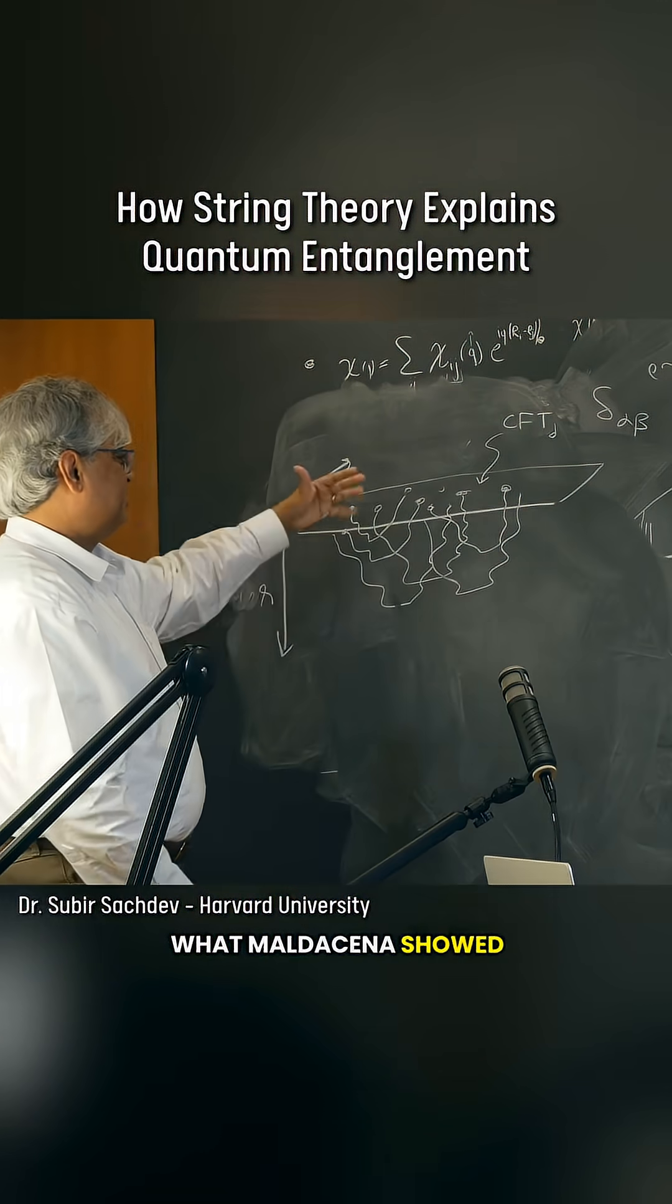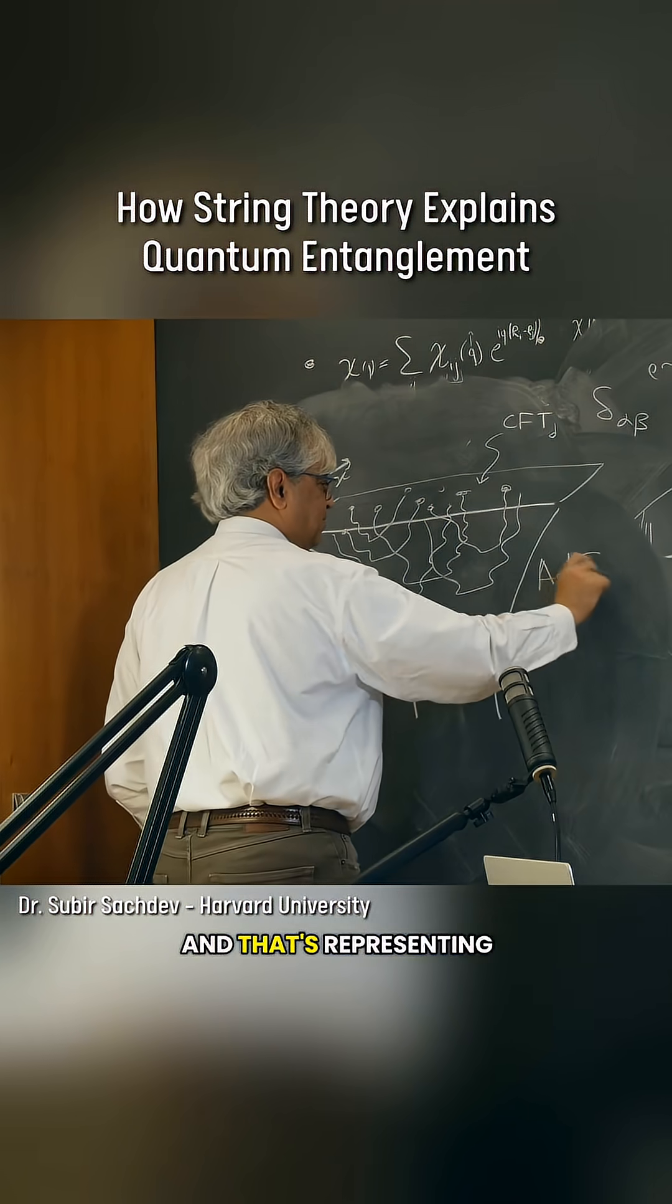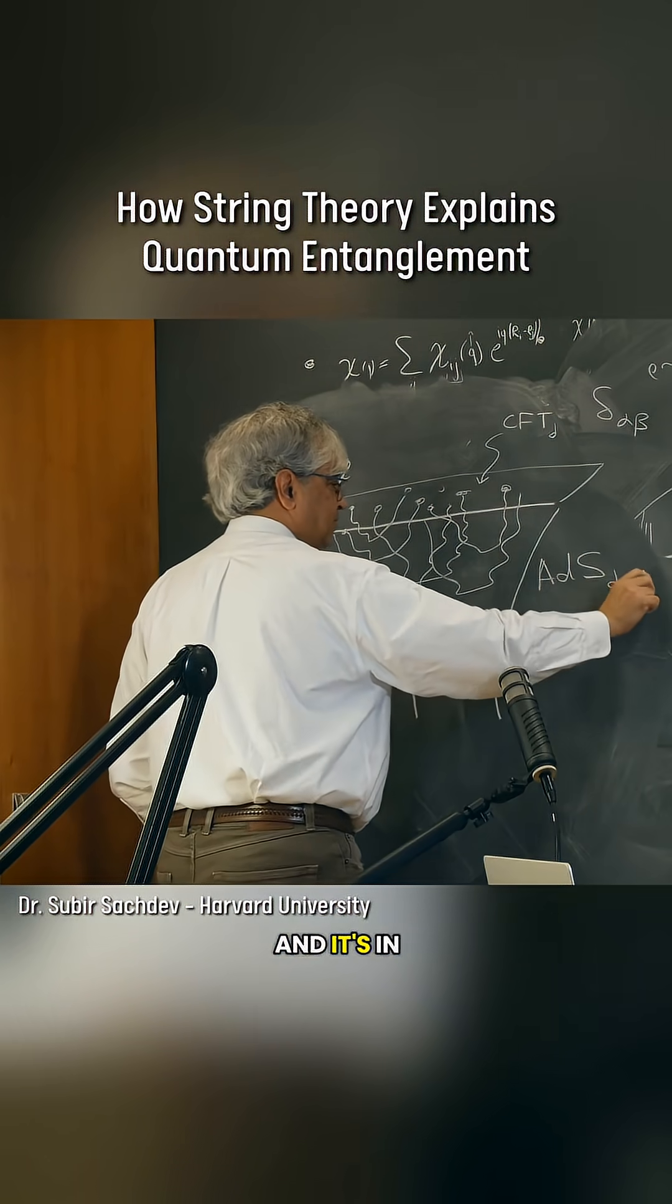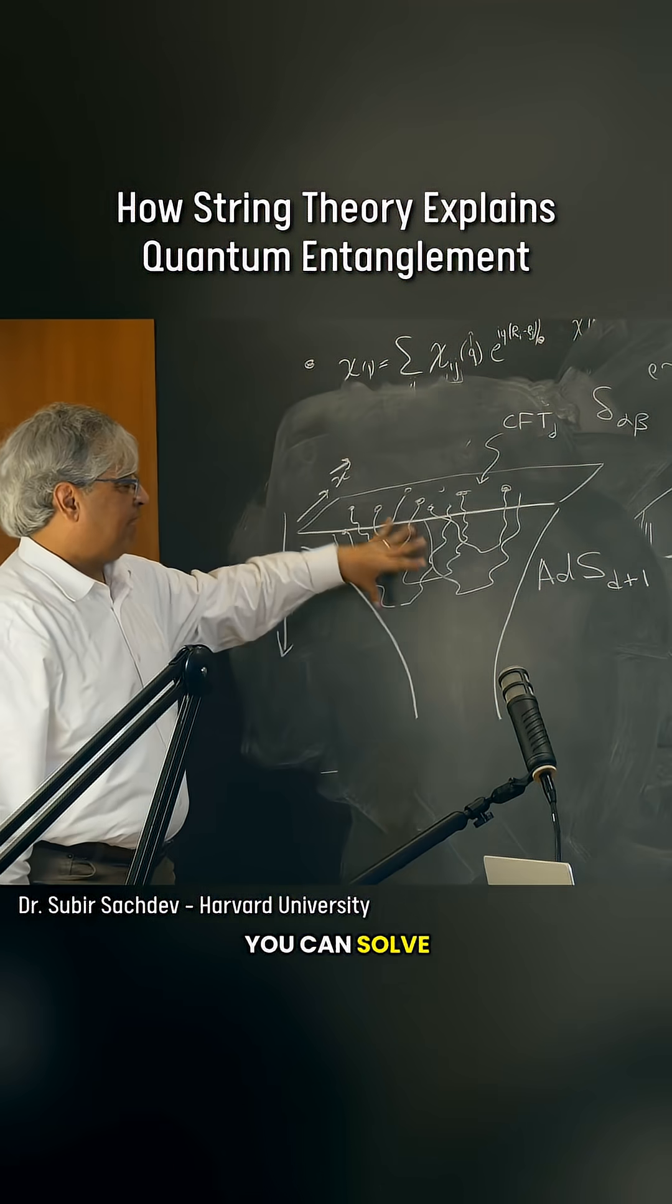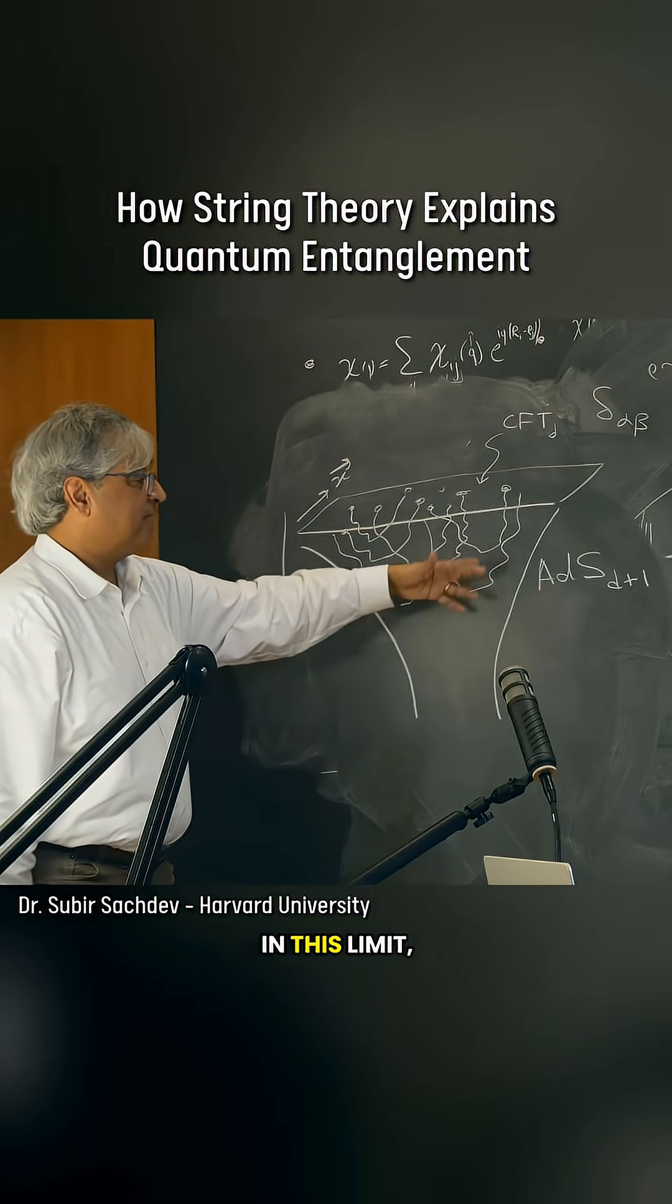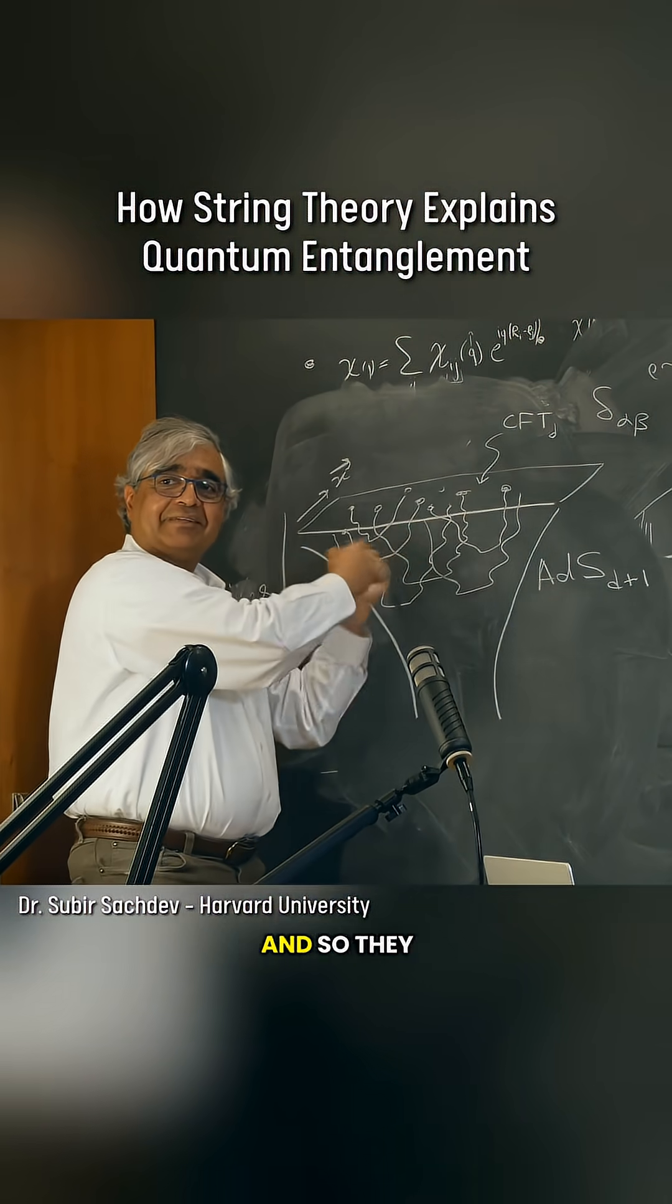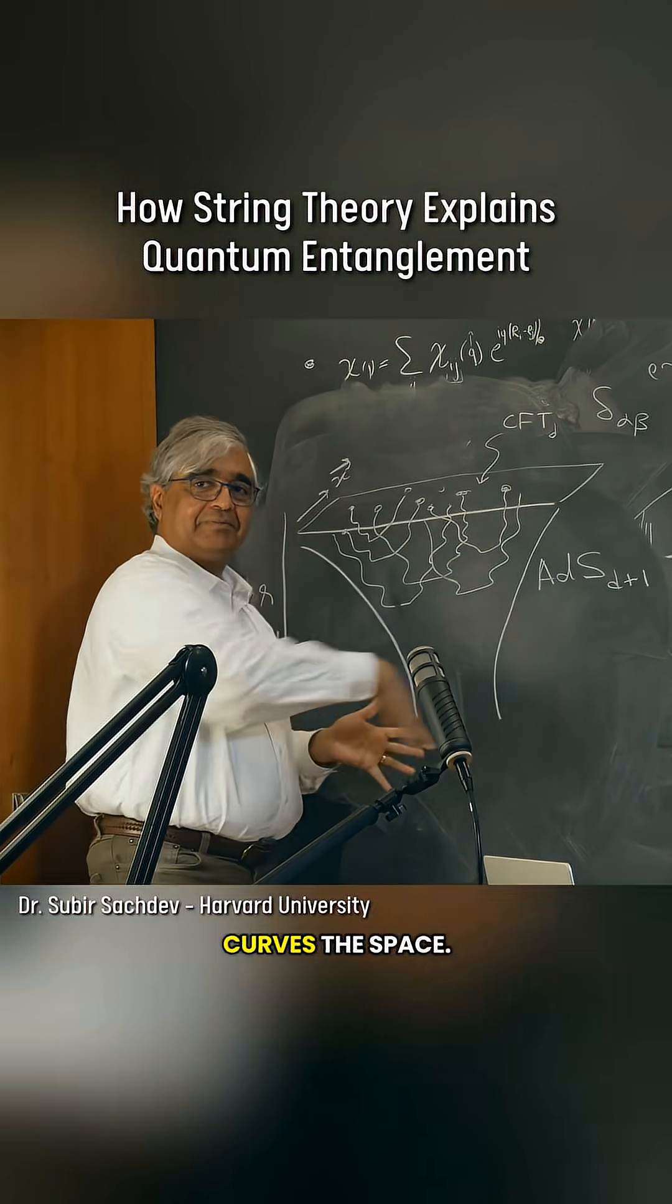What Maldacena showed was this extra dimension was in fact curved. This space is what's called anti-de Sitter and that's representing the curvature of the space and it's in d plus one dimensions. You can solve gravity in ADS2 or ADS d plus one. In this large N limit you can ignore the strings and just do gravity. These strings also emit gravitons that interact with each other and that's what curves the space.